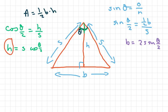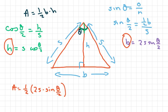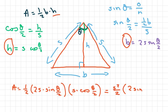Now we have our H and our B. So area equals one half times base, which is 2S times sine of theta over 2, times height, which is S times cosine of theta over 2. When you simplify this, you pull out the S's and get S squared over 2 times 2 sine of theta over 2 times cosine of theta over 2.